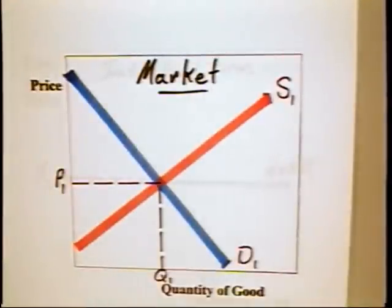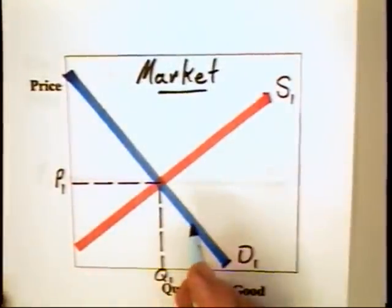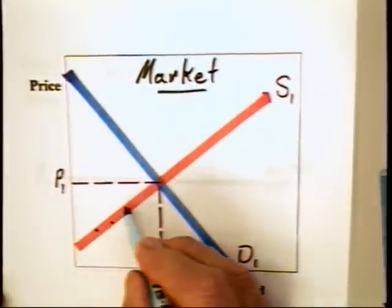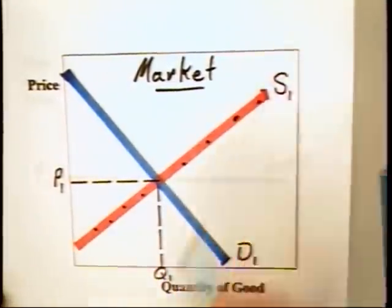This video module is about long-run production under perfect competition. You will recall that we started our analysis with simple supply and demand curves. This is a graph something like this. That is, we developed a supply curve and said underlying it was increasing marginal cost.